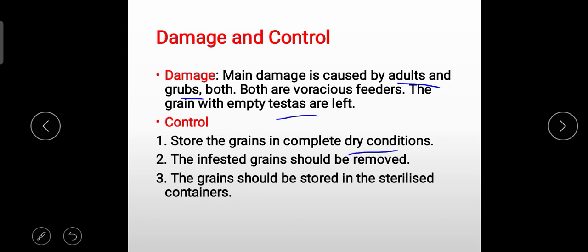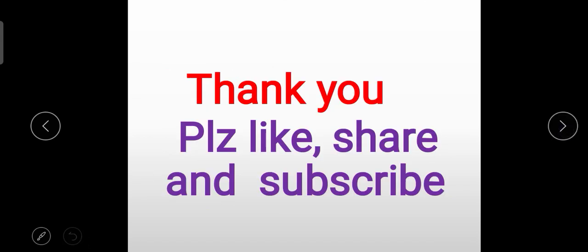For control, grains should be stored in complete dry conditions. The storage location and the grains themselves should be completely dry. Infested grains should be removed. Grains should be stored in sterilized containers to prevent moisture and reduce damage risk. So students, our storage grain pests are now complete with this third video. I hope you understood well with the help of diagrams. Thank you.